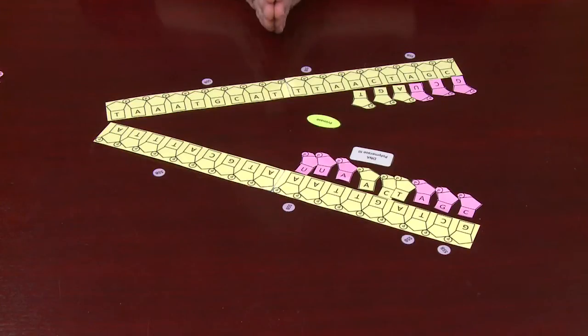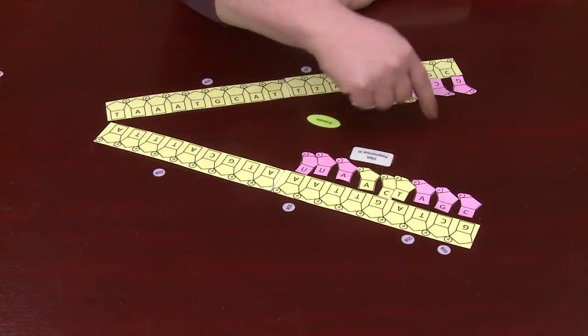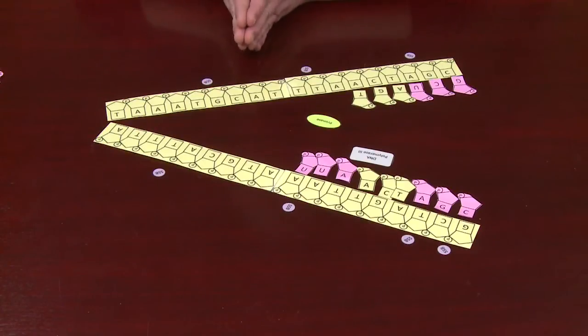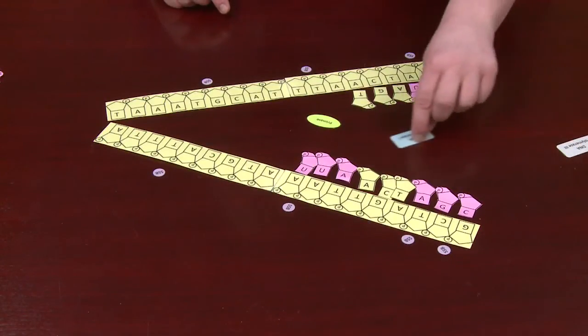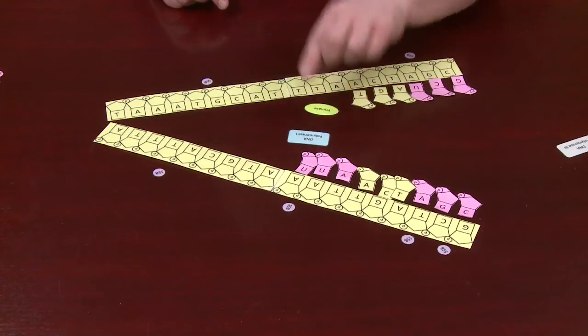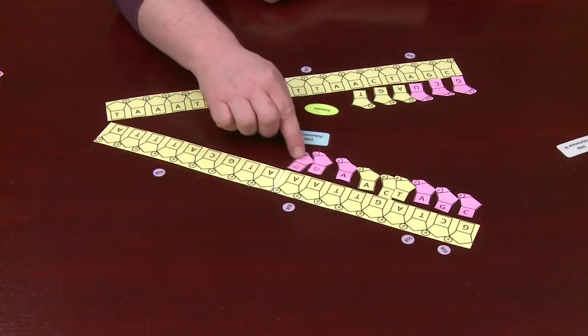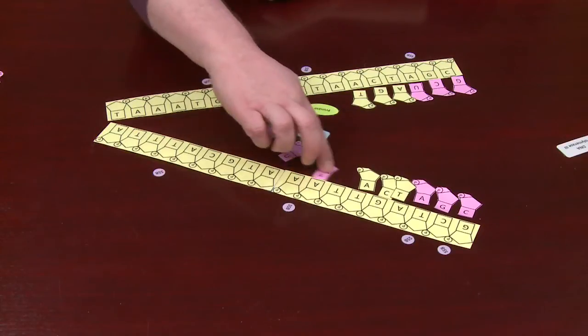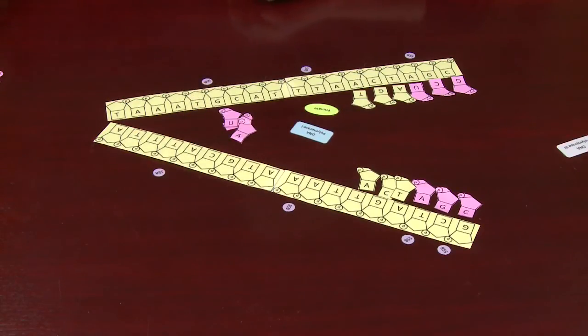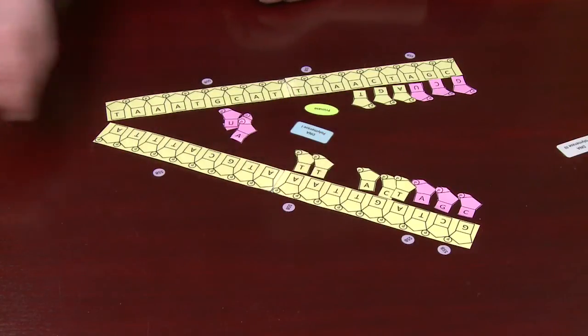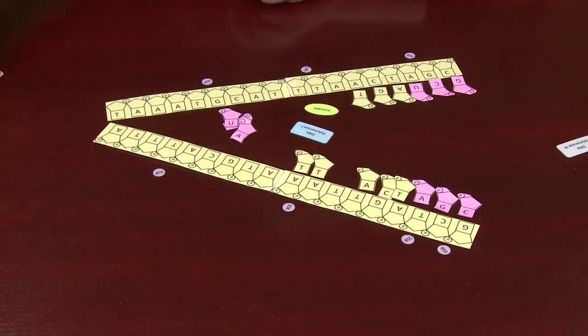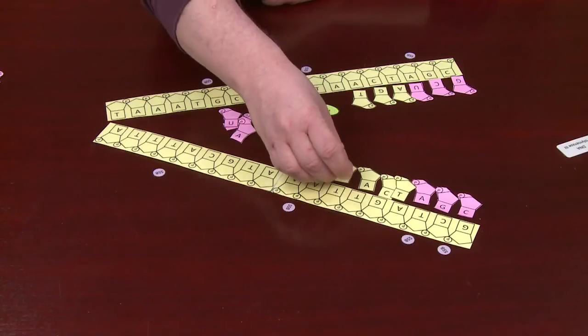Now you have a partially synthesized DNA molecule, but you have these regions of RNA that need to be gotten rid of. For that, DNA polymerase 1 will come in and remove the RNA and synthesize in the appropriate DNA.